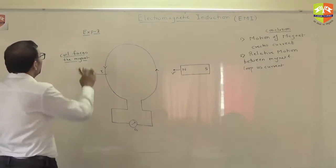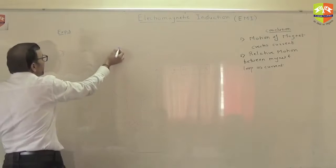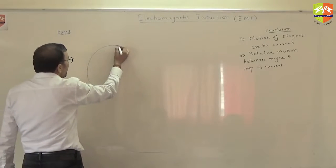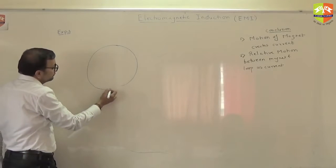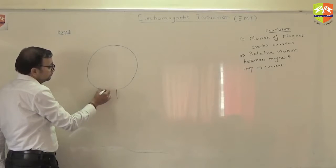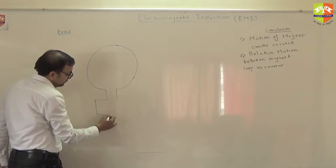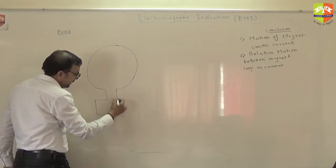Now, here is experiment number 3. In experiment number 3, you have a loop with a galvanometer like this.